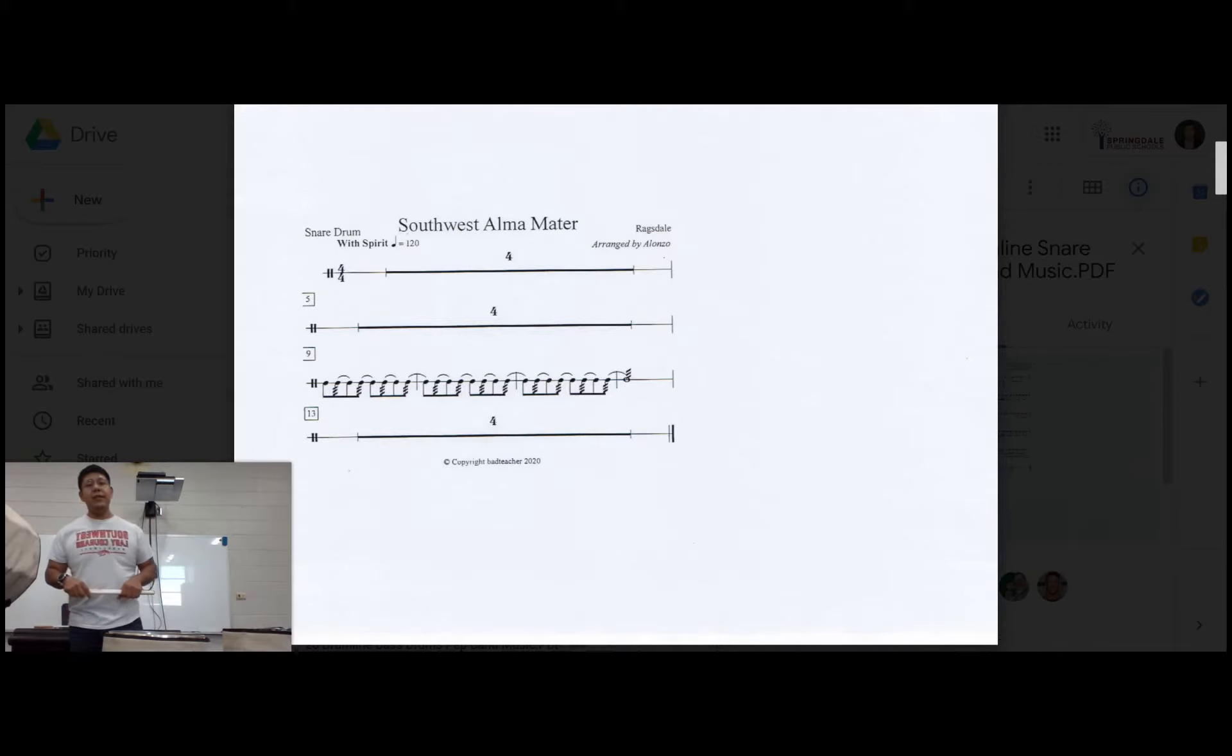But the first thing we're going to do is look at the time signature. So if I look at the time signature right now, it says 4-4 time, which is 4 beats in a measure. The quarter note gets the beat.